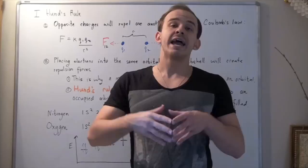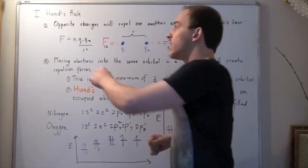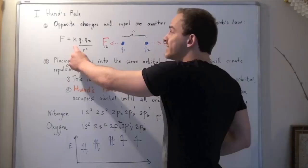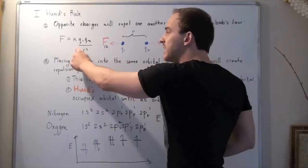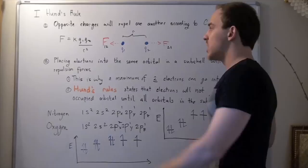Opposite charges attract and like charges repel, and they do so according to Coulomb's law, which is given by the following formula. The force that either charge feels due to the other is given by constant K times charge of 1 times charge of 2 divided by distance between them squared.